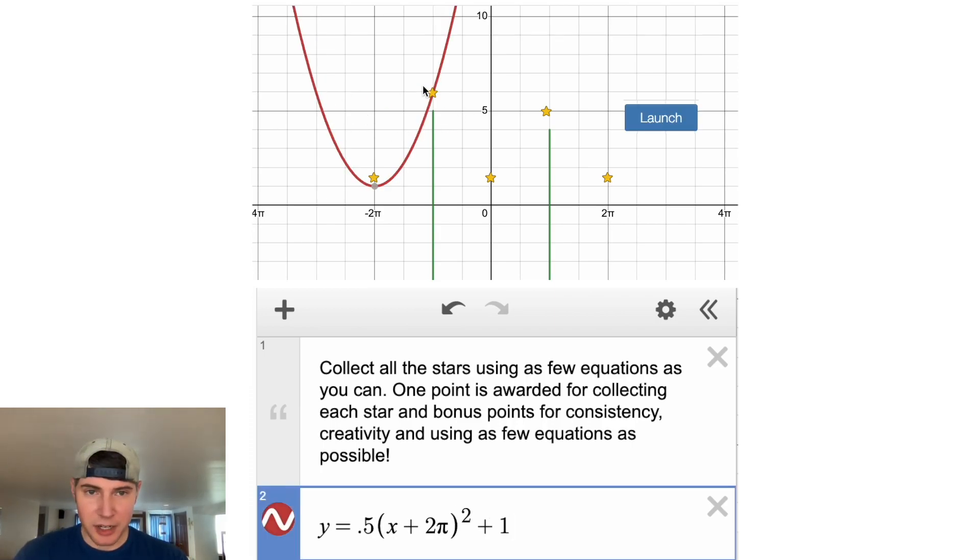So we're going to put a restriction right here at, let's say, 6. Put squiggly marks and let's say y is less than or equal to 6. Let's see what happens here. Yeah, it's just not enough to get to these other ones.